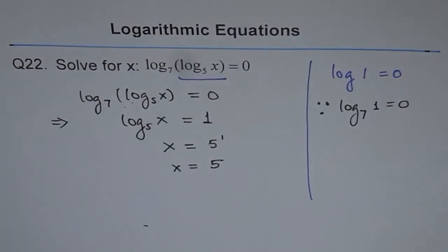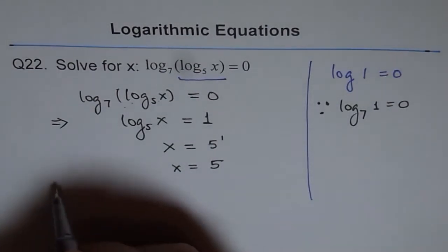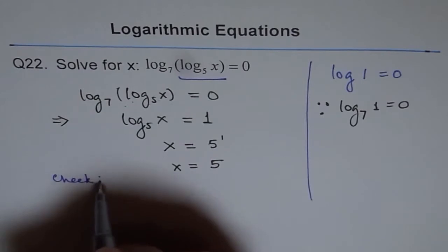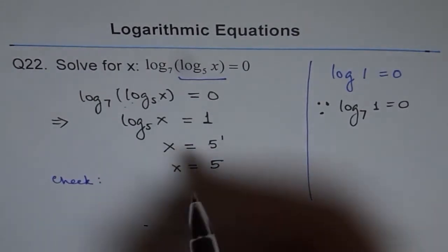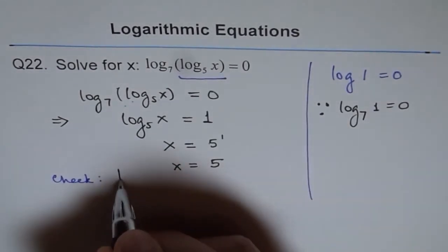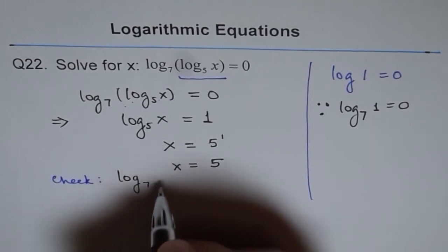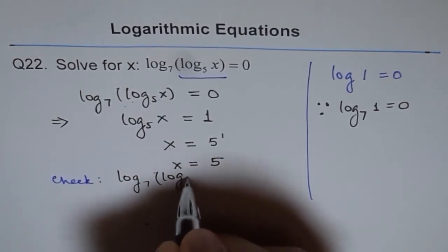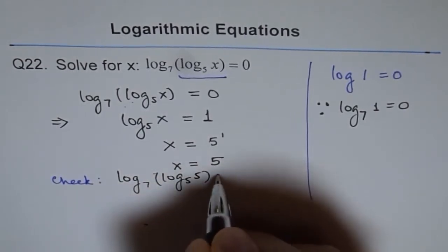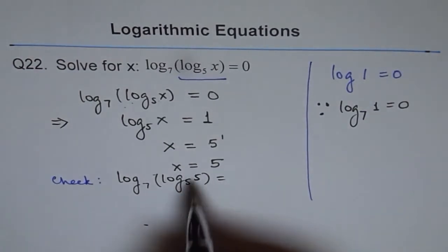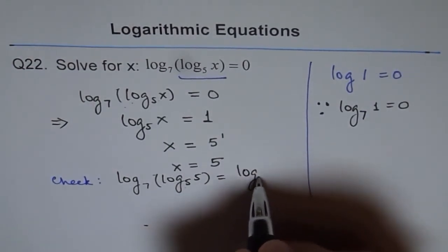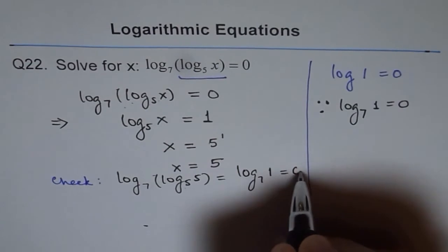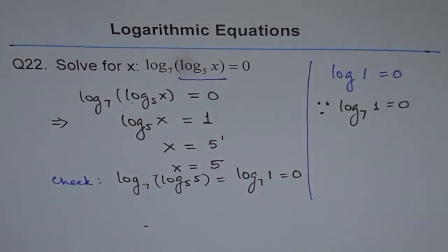Now, you can always check. Checking is always important in any log equation. Let us substitute 5 here and see what we get. Log base 7 of log base 5 of 5. Log base 5 of 5 is 1. So we get log base 7 of 1, and that equals 0. So that is the right solution. Thank you.